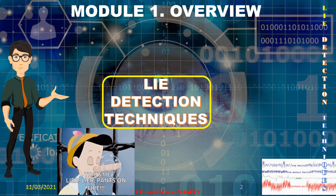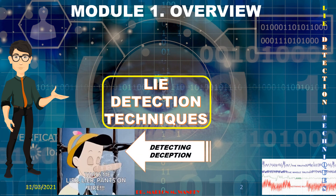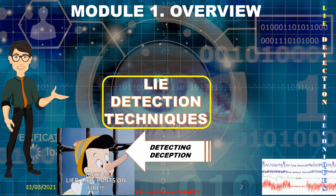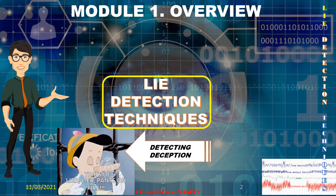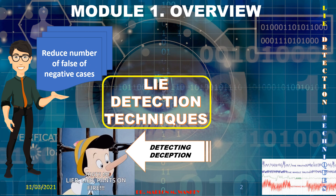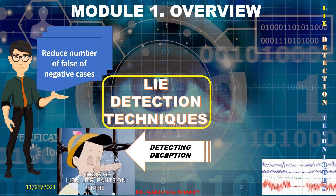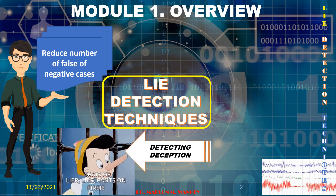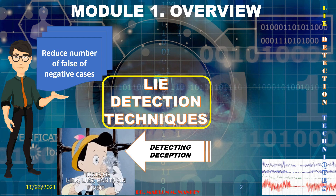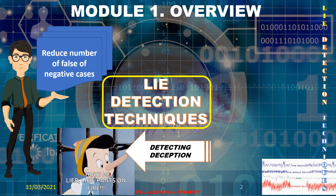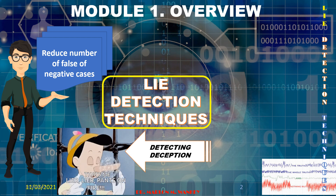Lie Detection Techniques are used for detecting deception, determining the truth, and revealing the truth. The purpose of these techniques is to reduce the number of false negative cases — to avoid anyone being accused of a crime they never committed. As we have learned, it is better to let a thousand criminals escape than to let a single innocent person be put behind bars.